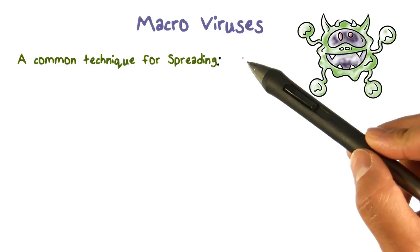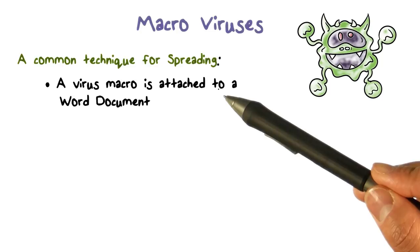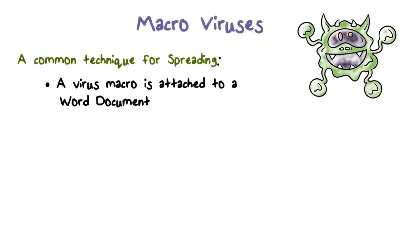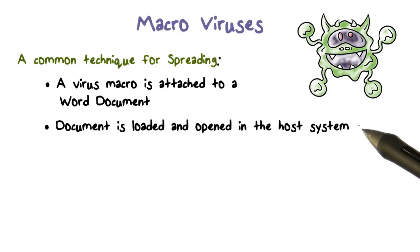Here's how a macro virus can typically spread. First, the attacker creates a macro that contains a virus and attaches it to a Word document. This document can then be sent around, for example, through an email attachment. When an unsuspecting user clicks on the email attachment and opens the document, the document is opened on the user's computer.